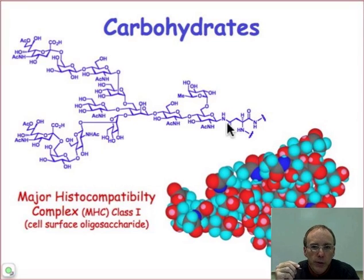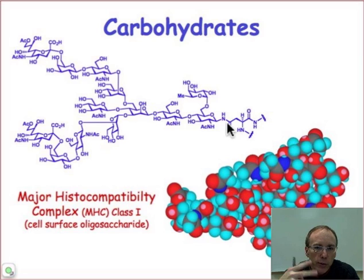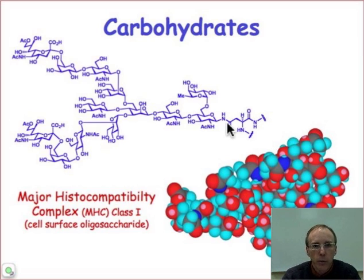Let me remind you that we've been studying the major classes of biomacromolecules. We began by looking at the proteins and their building blocks, amino acids. Now we're ready to look at carbohydrates and their building blocks, monosaccharides. And from here, we'll finish up the semester by looking at the third major class of biomacromolecules, the polynucleic acids.